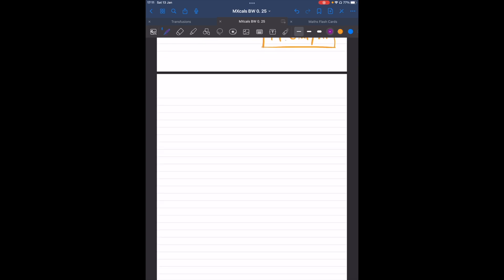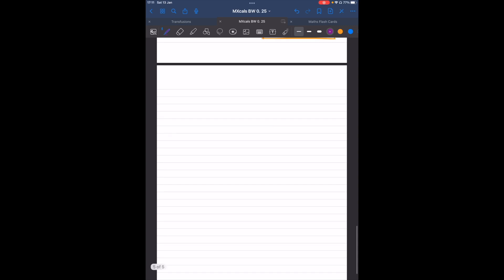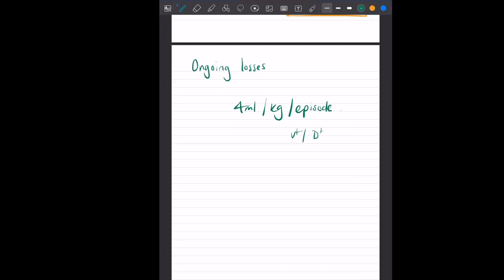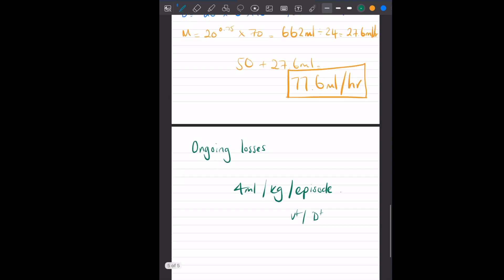So ongoing losses - ideally what you'd do is measure the loss. Physically measure it and say, right, this patient has lost 20 mls in his vomit, we need to put that 20 mls back onto its rehydration plan over a 24-hour period. And if you can't measure it - let's just say it goes into the bedding and gets soaked up or it's outside - I was taught 4 mls per kilogram per episode of whatever it is, like that might be the vomit or it might be the diarrhea. So yes, ideally you measure them, ideally replace it, but otherwise I was taught to estimate it that way. You would add it on to that daily amount, but you wouldn't have to worry about that if the patient wasn't having ongoing losses.